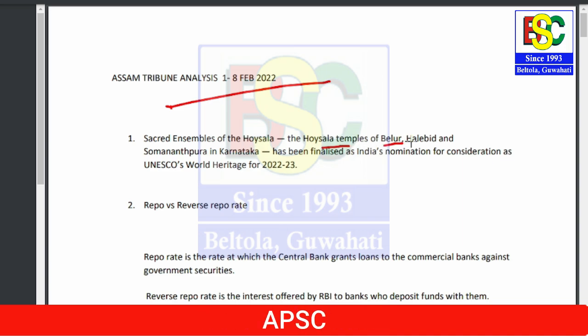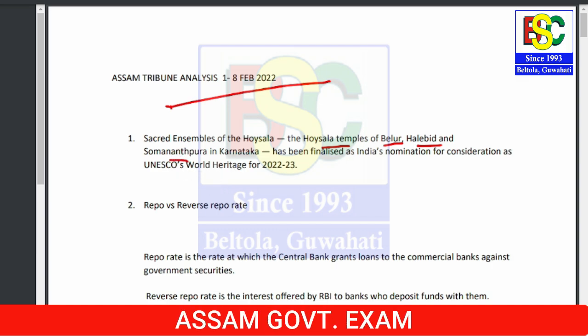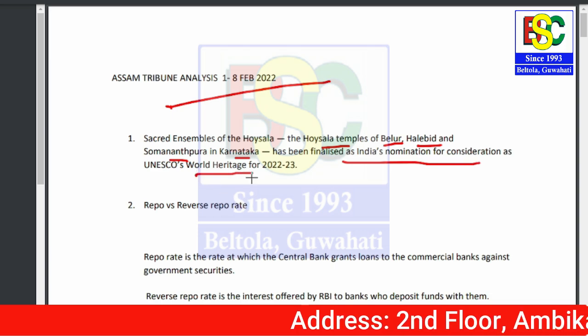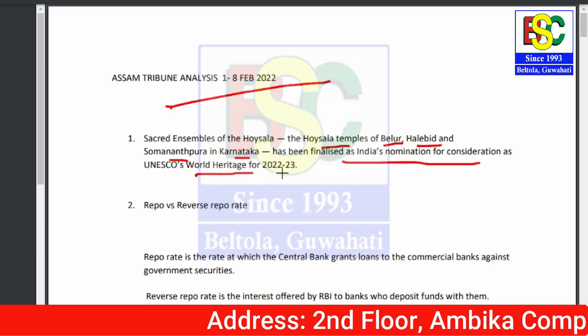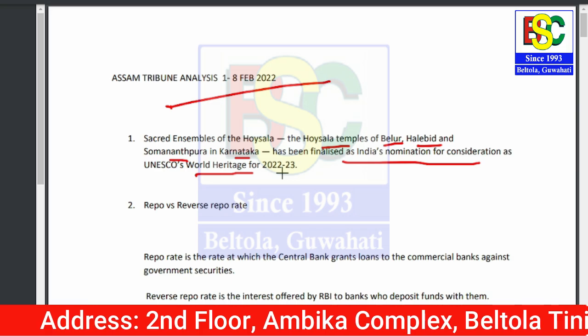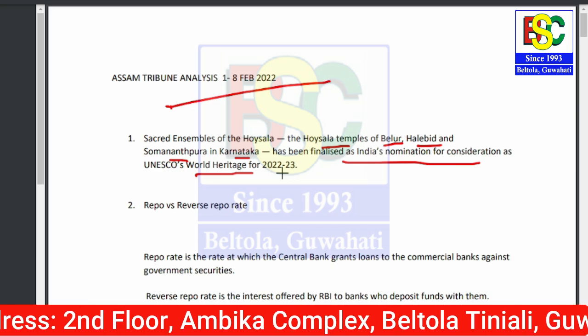Point number one: The Hoysala temples of Belur, Halebid, and Somnathapura in Karnataka have been finalized as India's nomination for UNESCO World Heritage 2022-23.